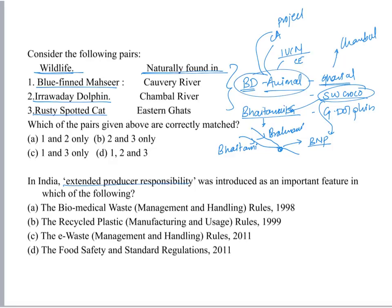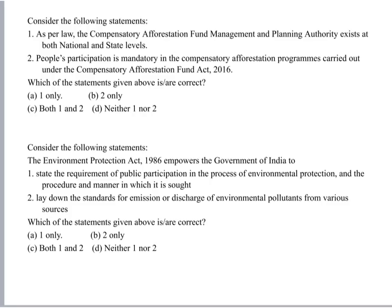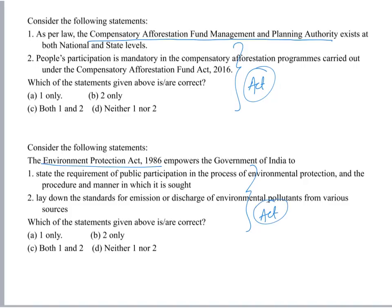From this point we have extended producer responsibility — it was introduced as an important feature in which act. This question is regarding acts and policies. Similarly, the next question deals around CAMPA — Compensatory Afforestation Management and Planning Authority — also related to acts and policies. The next question deals around the Environment Protection Act, also related to the acts part.